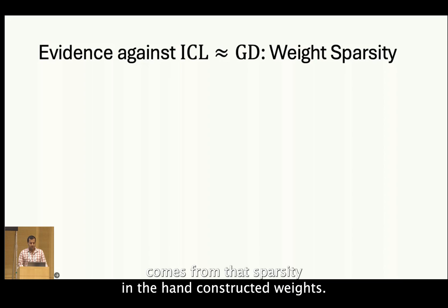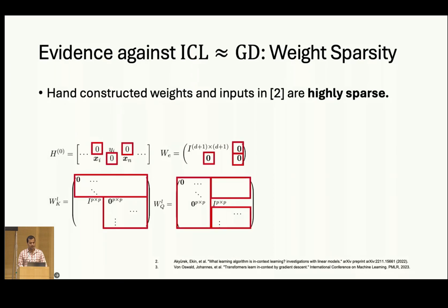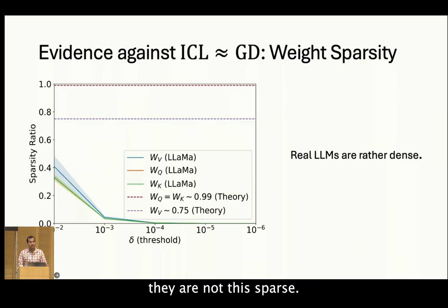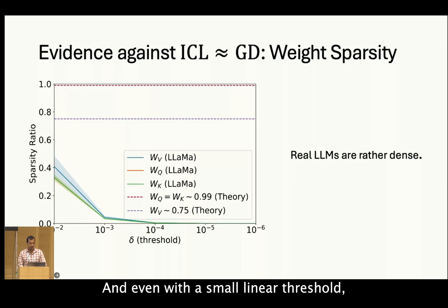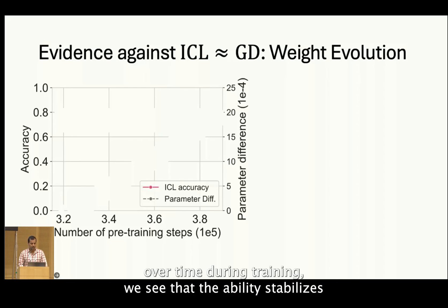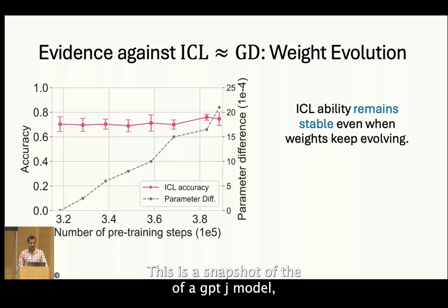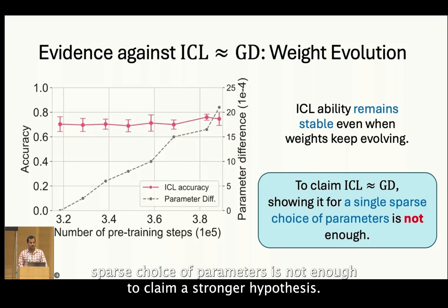Another piece of evidence against the formulations comes from the sparsity in the hand-constructed weights. These hypothetical weights are highly sparse and consist of a lot of zeros — even the non-zero matrices are identity matrices, which are mostly zeros. Real LLMs are not this sparse. We plot the percentage of parameters with absolute values less than a certain threshold, and even with a small threshold, the LLaMA model weights are quite dense compared to these theoretical weights. Moreover, if you plot the performance of the language model on ICL tasks over time during training, the ability stabilizes after some point while the parameters keep updating — shown here as a snapshot of a GPT-J model at different training checkpoints. Therefore, showing that an equivalence exists for a single sparse choice of parameters is not enough to claim the stronger hypothesis.